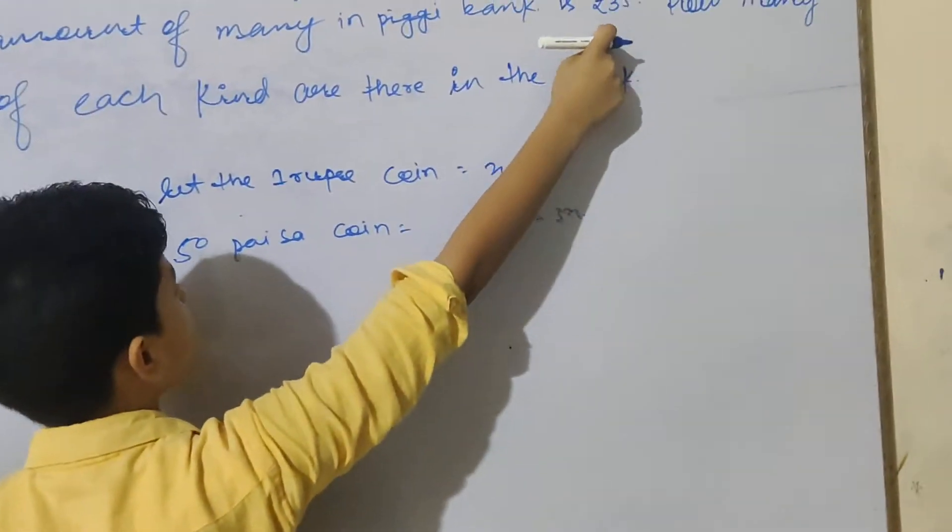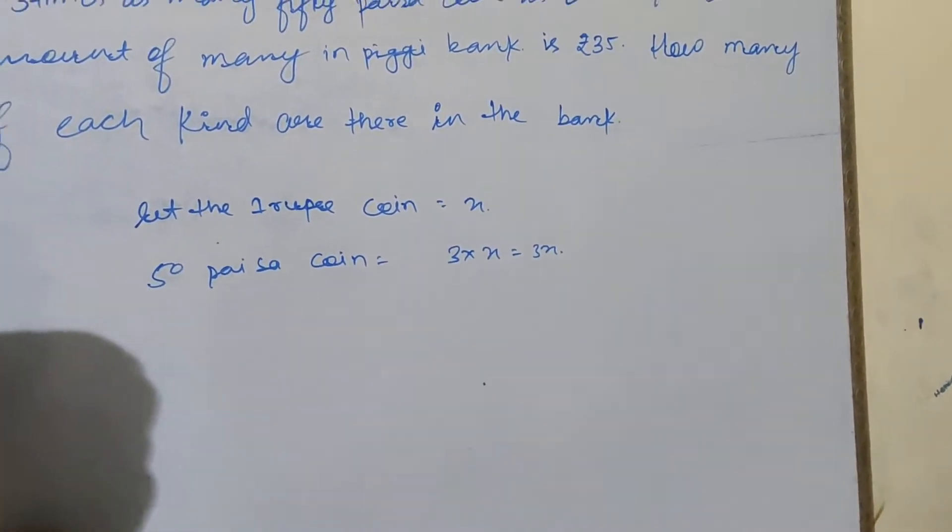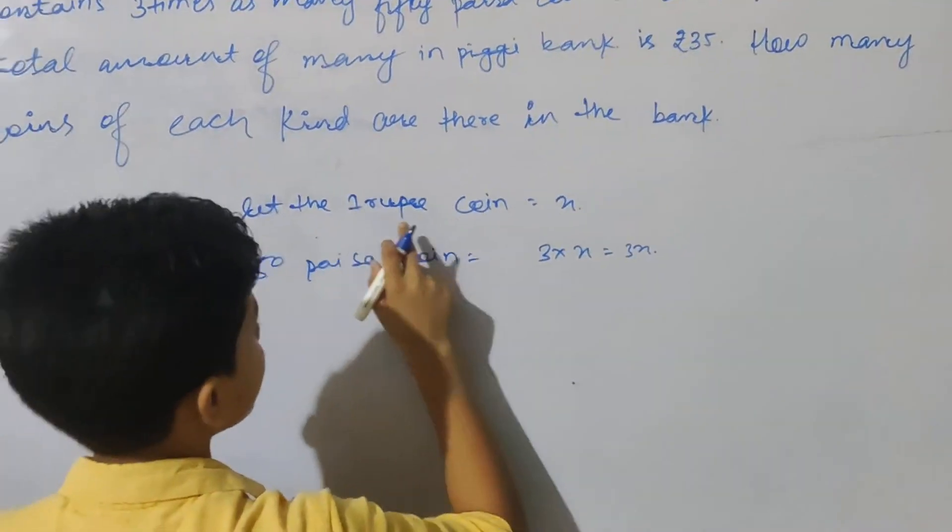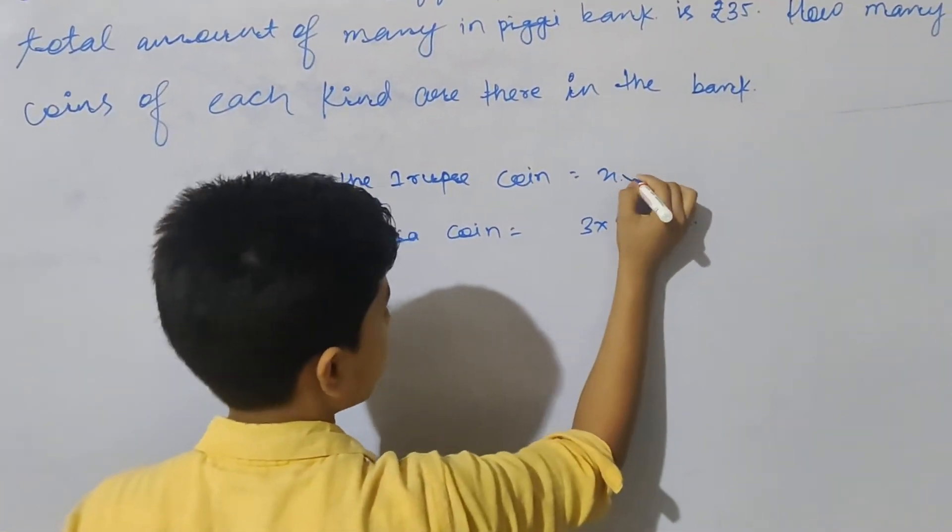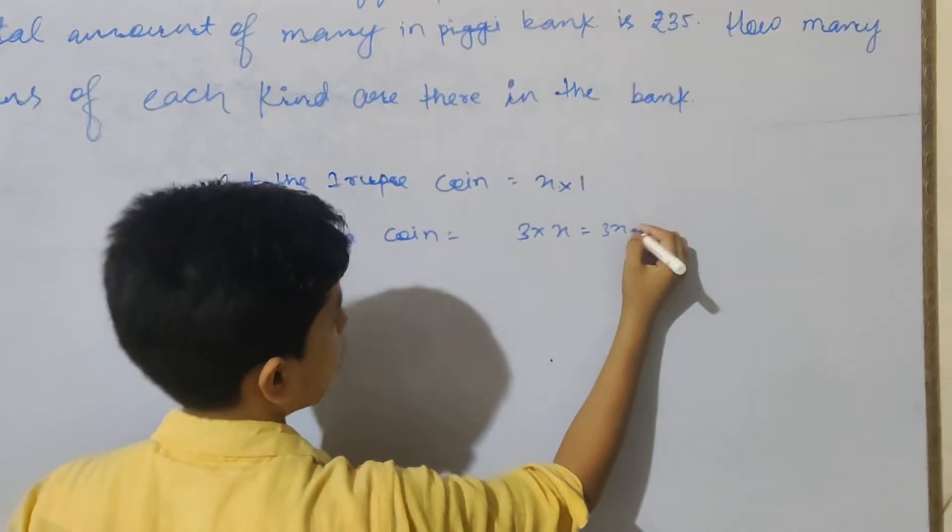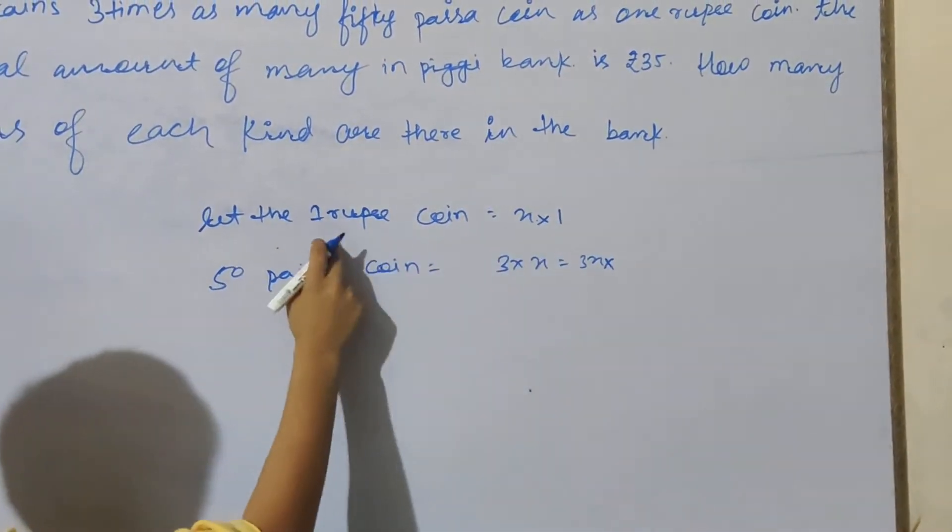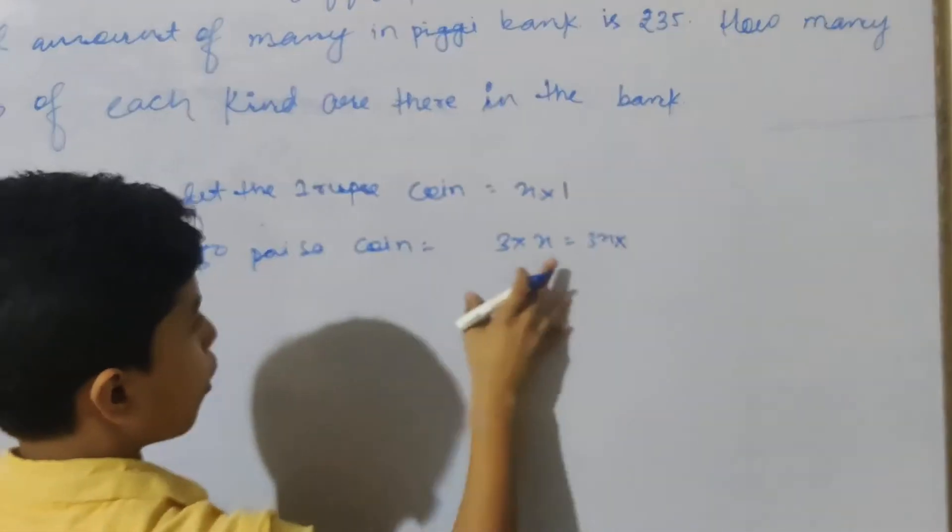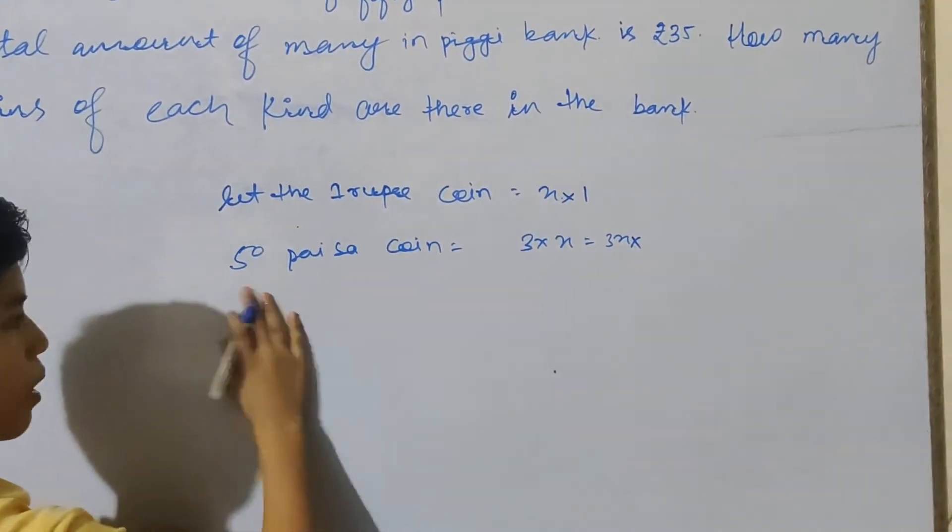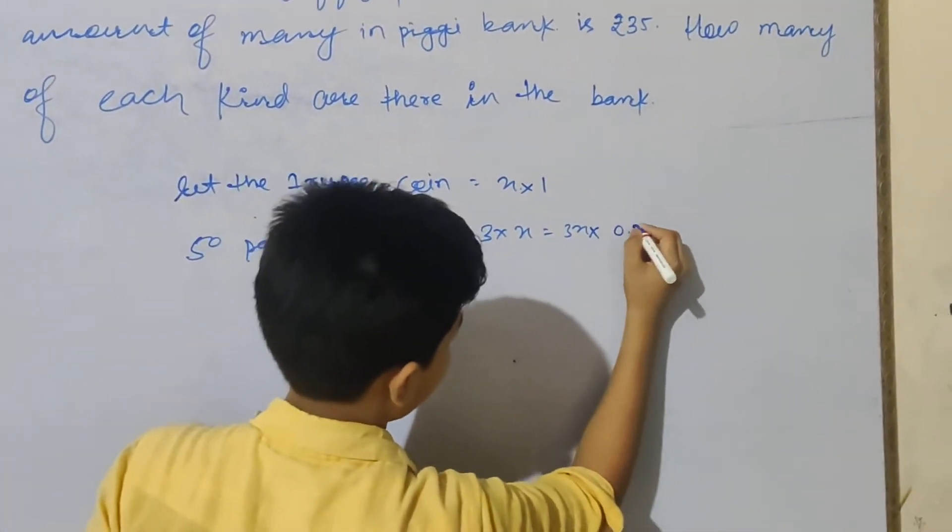Now look, there is amount of money. How much is 1 rupee? It is 1 times x. And for 50 paisa, this one will be 0.5 rupees, so we can do 0.5 times 3x.